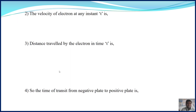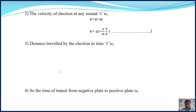Now let us consider the velocity of the electron at any instant t. To calculate the velocity, we use the kinematical equation V equals U plus AT. Here V (written in bold) is the velocity — do not confuse it with the potential difference. Since the initial velocity U is 0, the equation becomes V equals AT, which equals eV upon Md into t. This is equation number 1.